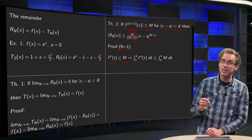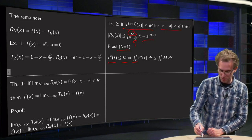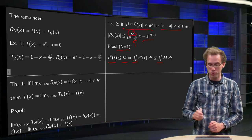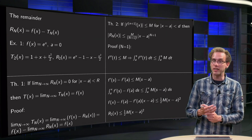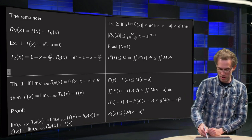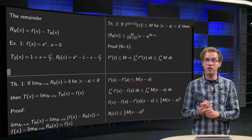n equals 2 and 3 etc. go exactly the same, you just have to do a few more integration steps. So we will do the n equals 1 proof. Assumption is that your f double prime is smaller than capital M.